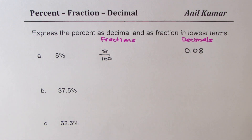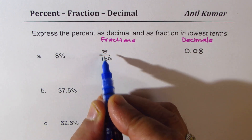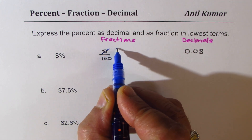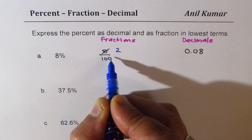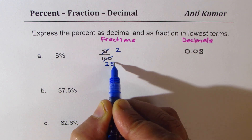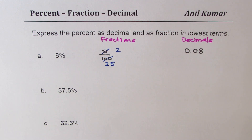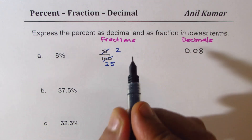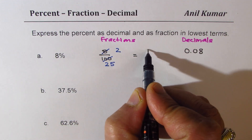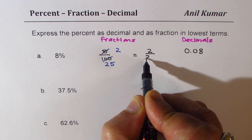Now let us see how to simplify and write it in lowest terms. You can divide both by 4. 4 times 2 is 8 and 4 times 25 is 100. Therefore, in lowest terms, I could write this as 2 over 25.